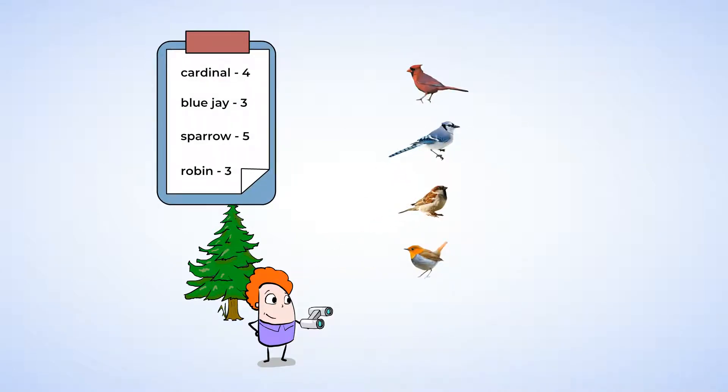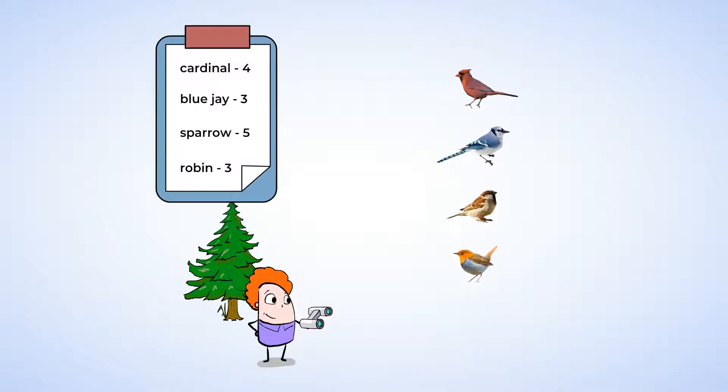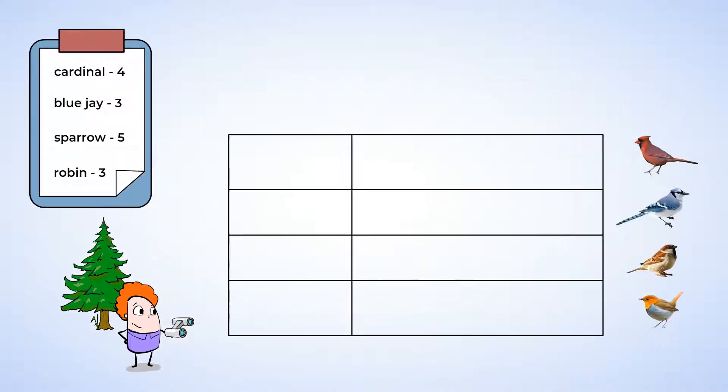We can use this information to make a picture graph. First, write out the four categories: Cardinal, Blue Jay, Sparrow, and Robin.